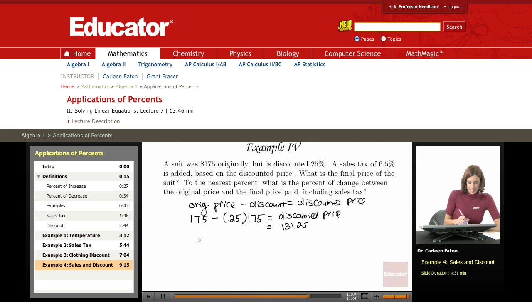Now I take the discounted price, and I'm going to add the amount of the sales tax to get the final price. Discounted price is $131.25. And since the sales tax...